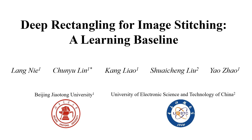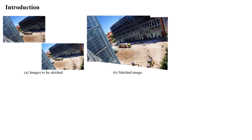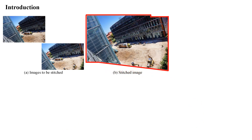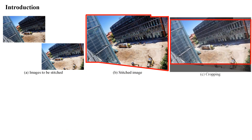Deep Rectangling for Image Stitching: A Learning Baseline. Although image stitching technology provides a wider field of view, the stitched images suffer from irregular boundaries. To deal with them, one of the most common solutions is to crop the stitched image with a rectangle.